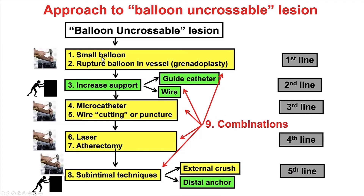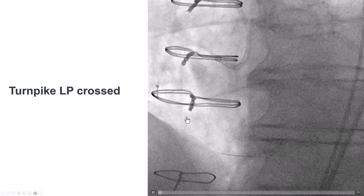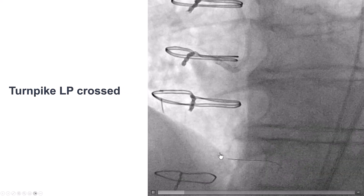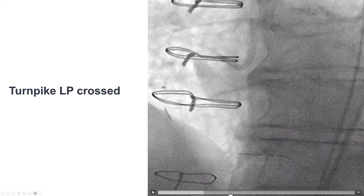The first step is to use a small balloon, then increase support. In our case, we used a 1.0 Sapphire that successfully crossed, so we predilated the RCA, and then the microcatheter — the same Turnpike LP microcatheter — could be delivered.